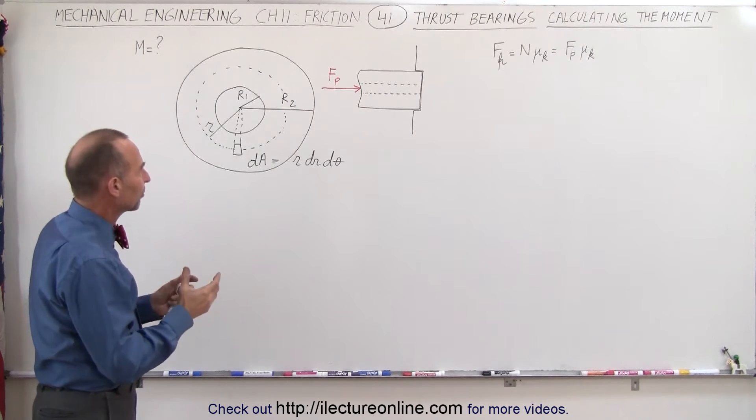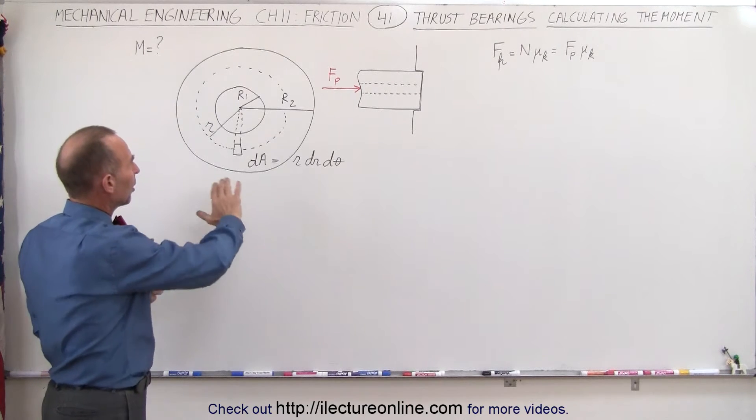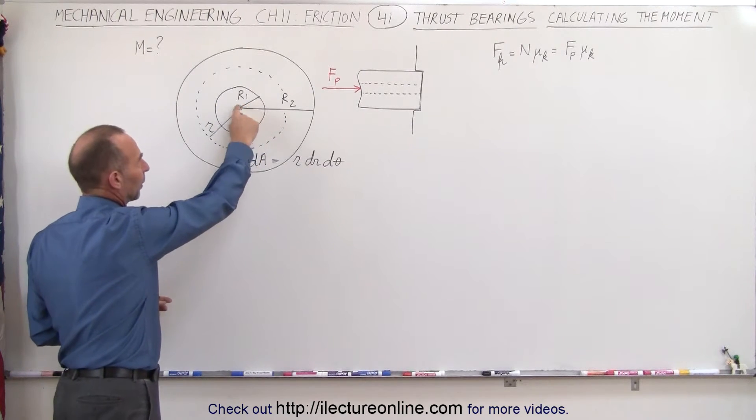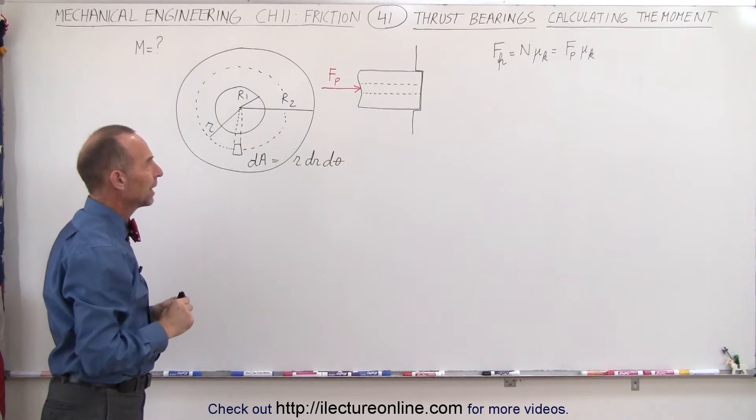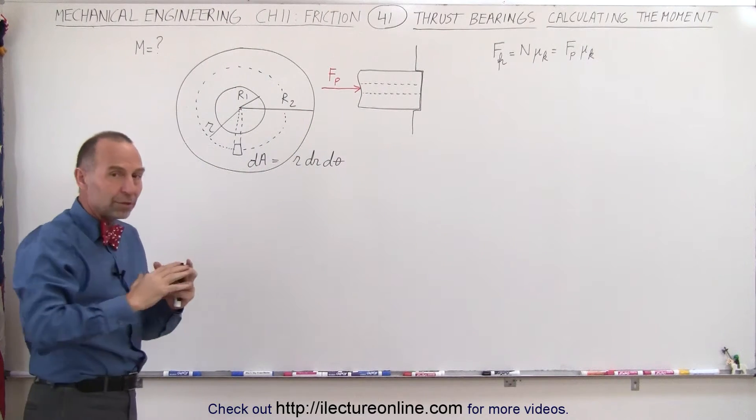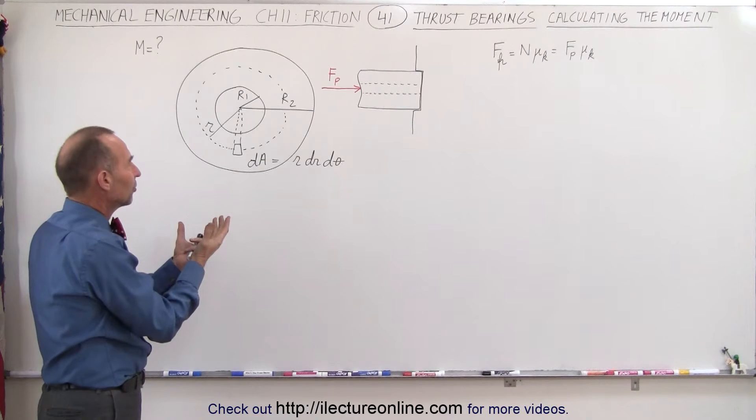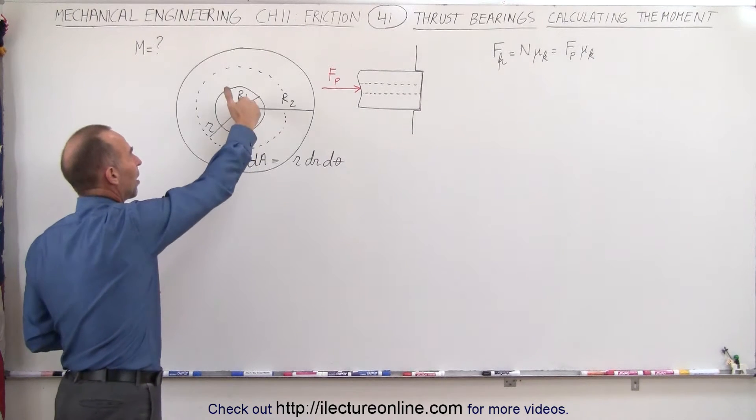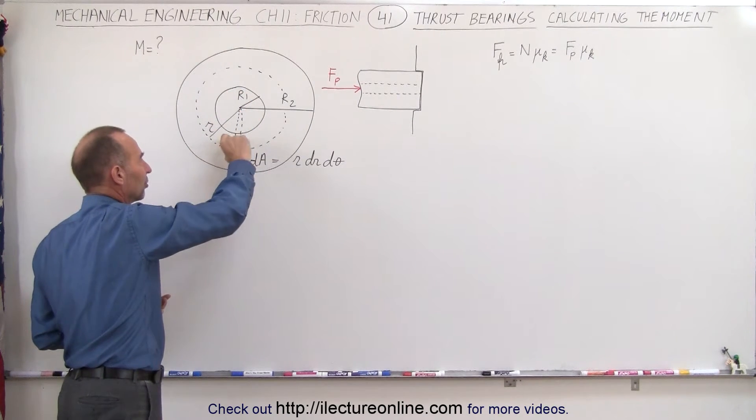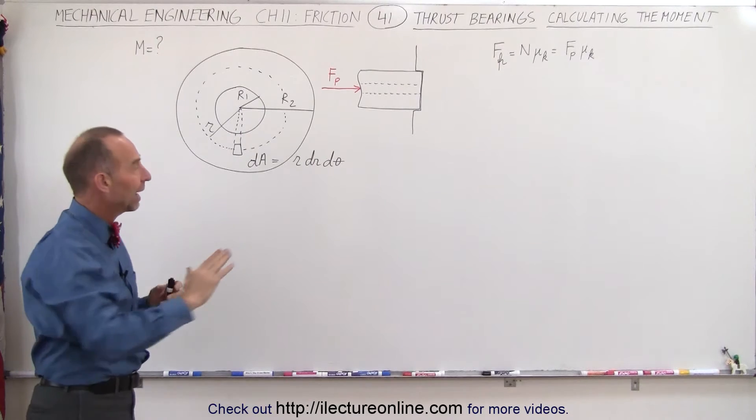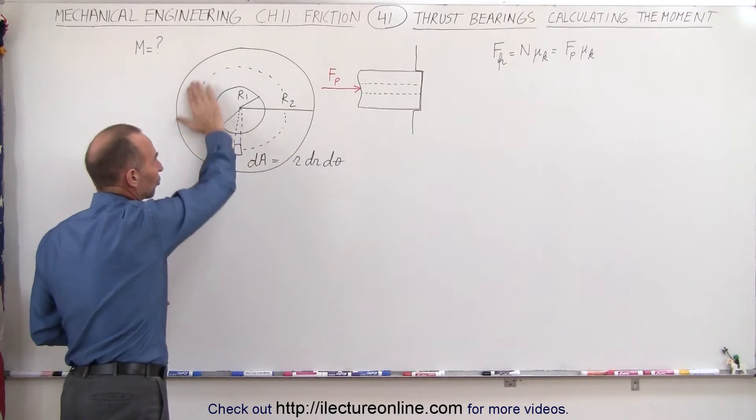And so what we have to realize here, we'll take as an example a hollow axle. So it has an inner radius R1 and an outer radius R2. And since the moment that the friction causes is dependent upon how far away from the center rotation the friction is occurring, we will have to integrate over the available surface right here.